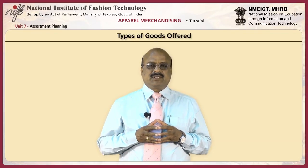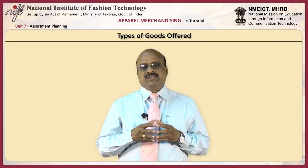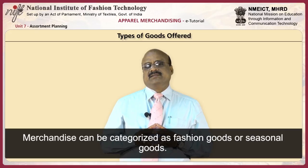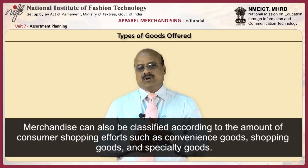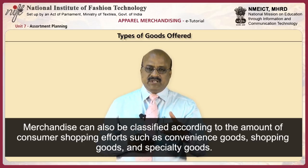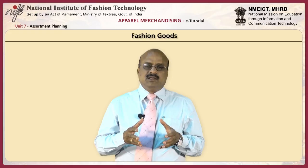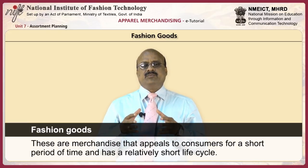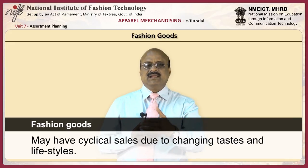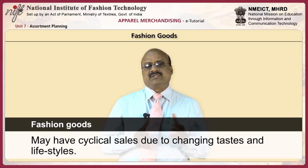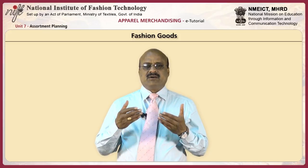A fourth factor the buyer must consider when planning the merchandise assortment is the type of goods offered. This depends on the merchandise policies of the store. Merchandise can be categorized as fashion goods or seasonal goods, and also classified according to the amount of consumer shopping effort such as convenience goods, shopping goods, and specialty goods. Fashion goods may be defined as merchandise that appeals to consumers for a short period of time and has a relatively short life cycle.